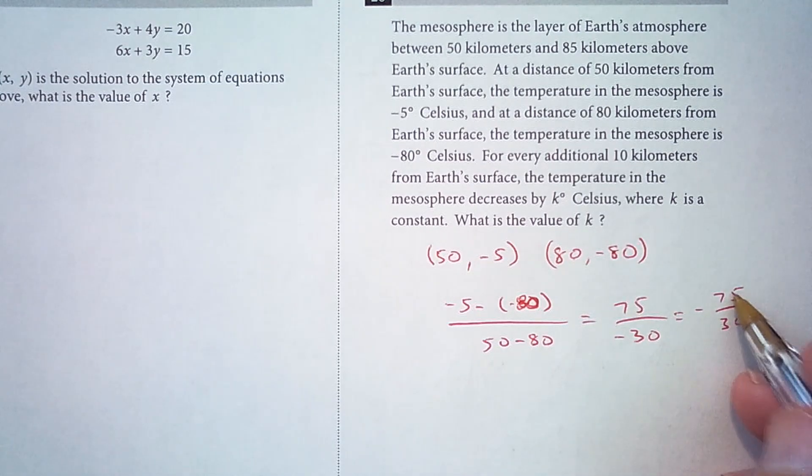Now 30 goes into 75 two full times and then another half times, so that's two and a half.